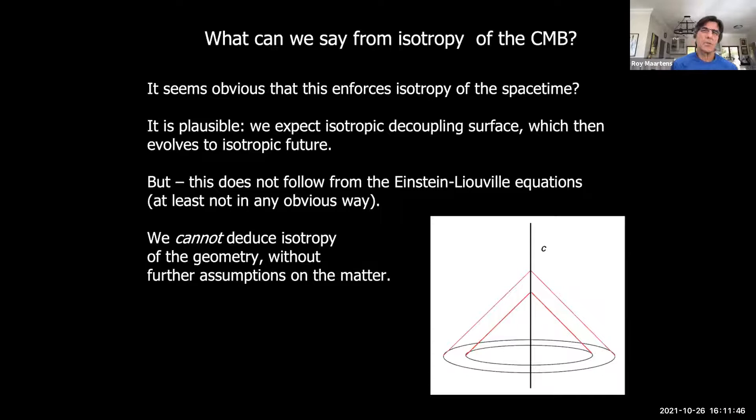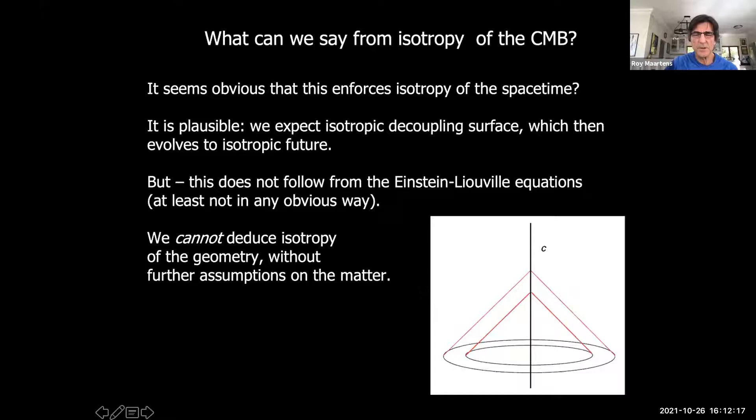What can we say purely on the basis of isotropy of the CMB? It seems obvious that if the CMB is isotropic then the geometry should be isotropic, but this is not true — I don't know of any proof of that. The basic reason is that we have to tie the matter into this scenario in order to actually deduce isotropic geometry from isotropic radiation.